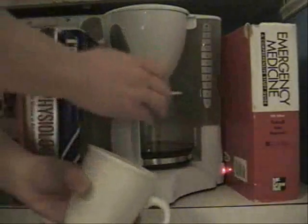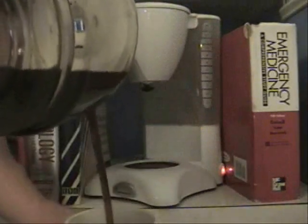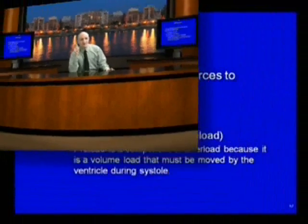The three major contributing forces to ventricular afterload — and this is why it's so stinking confusing, it's very hard to understand. Pleural pressure is one, arterial impedance is number two, and number three is end-diastolic volume, which is your preload. Afterload is confusing because preload is a component of afterload. Take a look at this slide here.